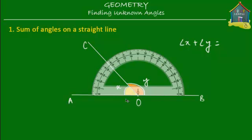I want to measure angle AOC first. AOC is formed by lines AO and CO, so I center the protractor on point O, place the zero on AO, and then see how many degrees are between AO and CO. We see that it's 46 degrees. So angle X is equal to 46 degrees.